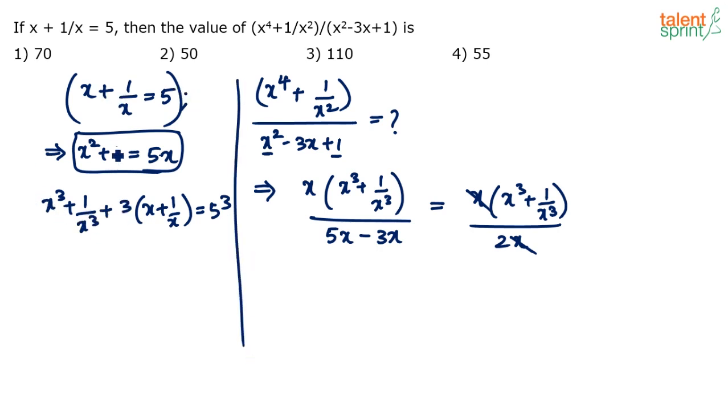x cube plus 1 by x cube plus 3 times of x plus 1 by x - you actually get 3x plus 3 by x. We are taking 3 common. Now why are we taking 3 common? Because x plus 1 by x equals 5 is known to us. Substitute this back here. So we get x cube plus 1 by x cube plus 3 into 5 equals 125. So from this, what do we get? x cube plus 1 by x cube equals 125 minus 15, 110.